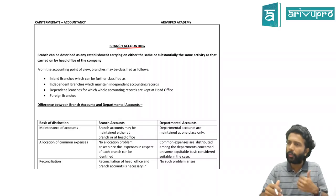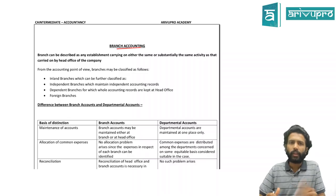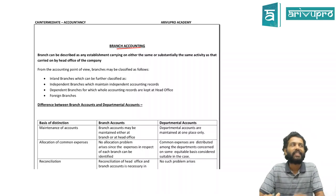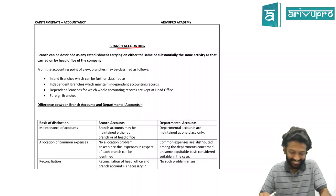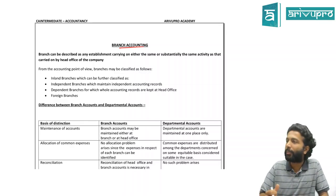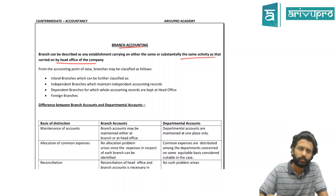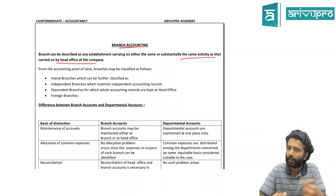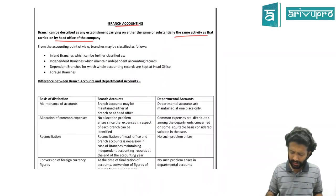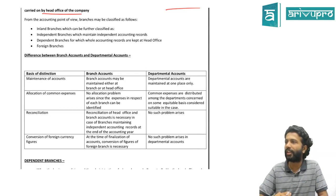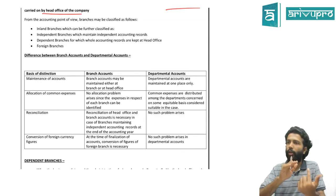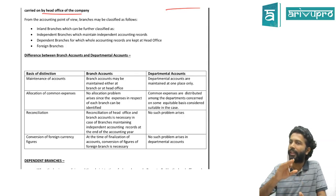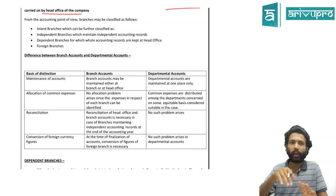Branch accounting - what do we mean by branch? A branch is an establishment which is more or less carrying on the same activity as that of the head office. Whatever activities the head office carries on, more or less the same activity is carried on by the branch. Is there any distinction between branch and departments? You can have departments in the same location - one factory with four divisions - but generally branches are physically located apart.